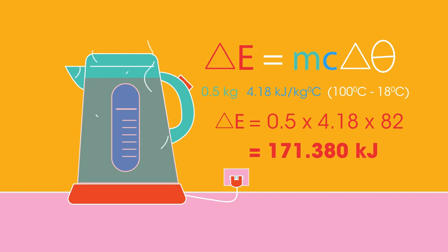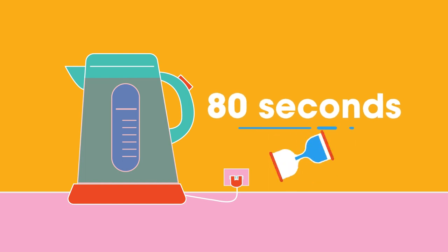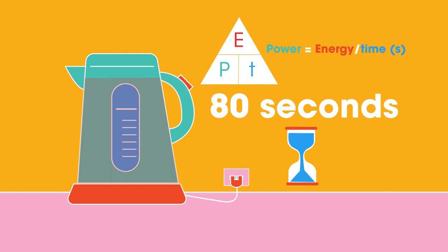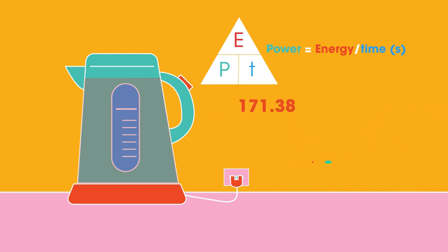This assumes there is no loss of energy during heating, which of course there will be — heat and sound will be lost to the surroundings. If this kettle took 80 seconds to boil, then we can begin to estimate the power of the kettle. Power is the rate at which energy is transferred: power equals energy over time.